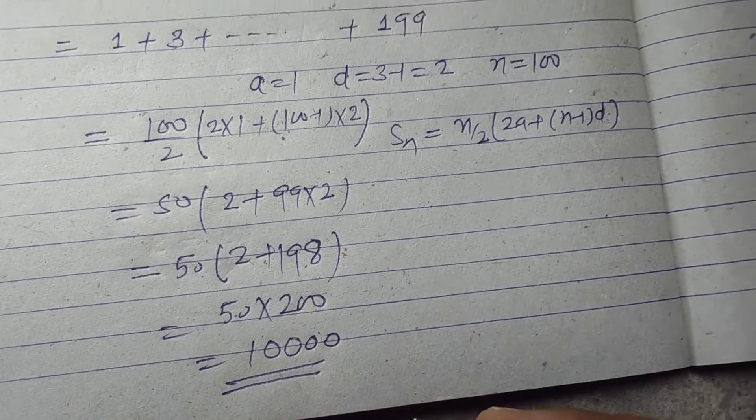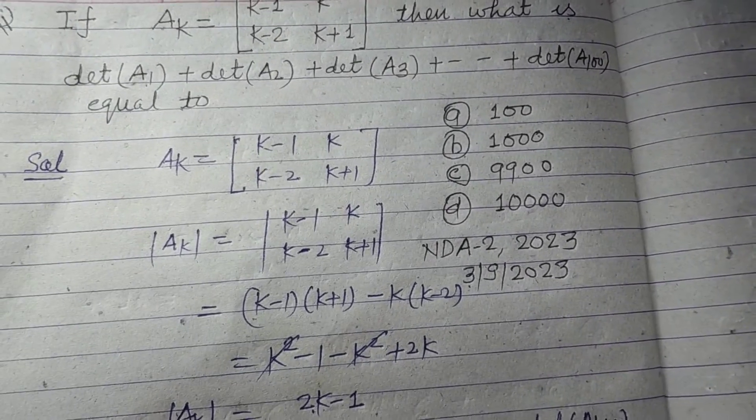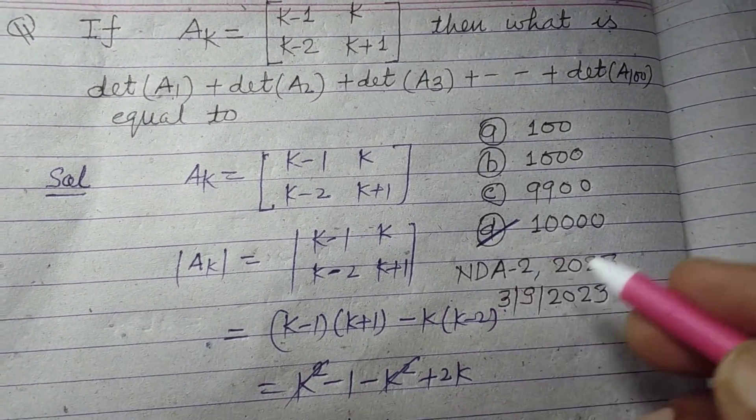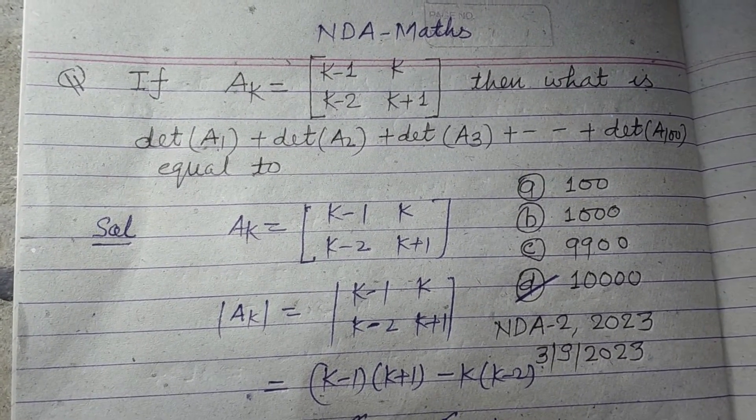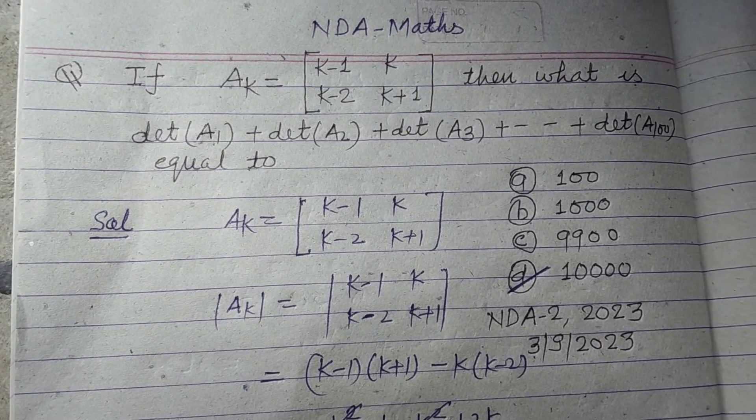So the sum is 10,000 which is given in option D. So student, option D of this question is correct. I hope you got it. Please like the video, subscribe the channel, thanks for watching.